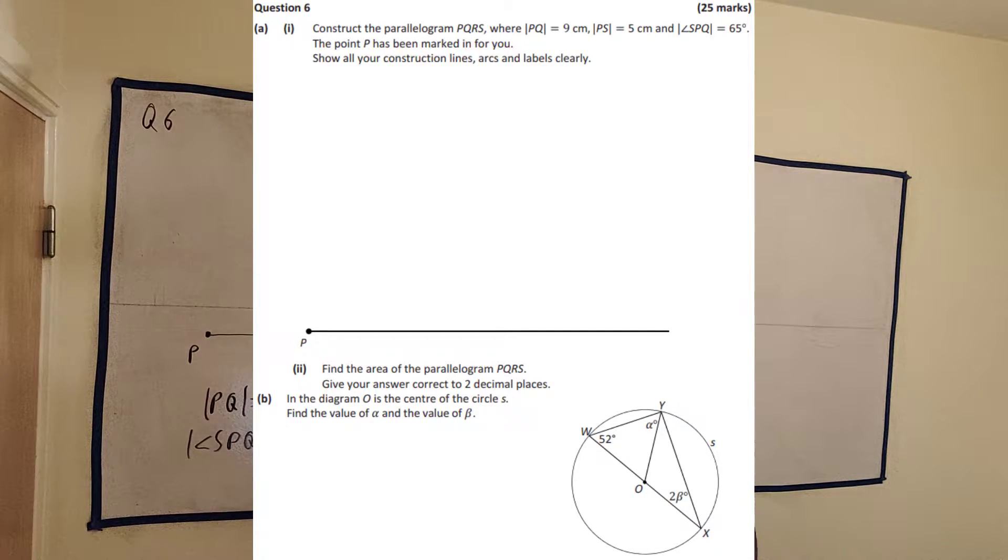This is question 6 from the 2019 Ordinary Level Leaving Cert Paper 2. You can find a link in the description below to an image of this question if you don't have it readily available. As you can see, the question is made up of two parts and it's all about geometry.